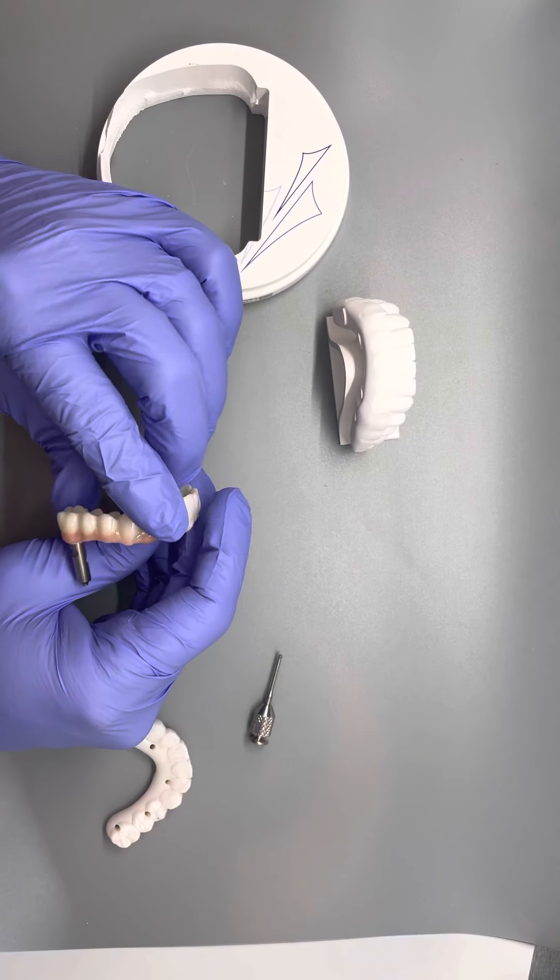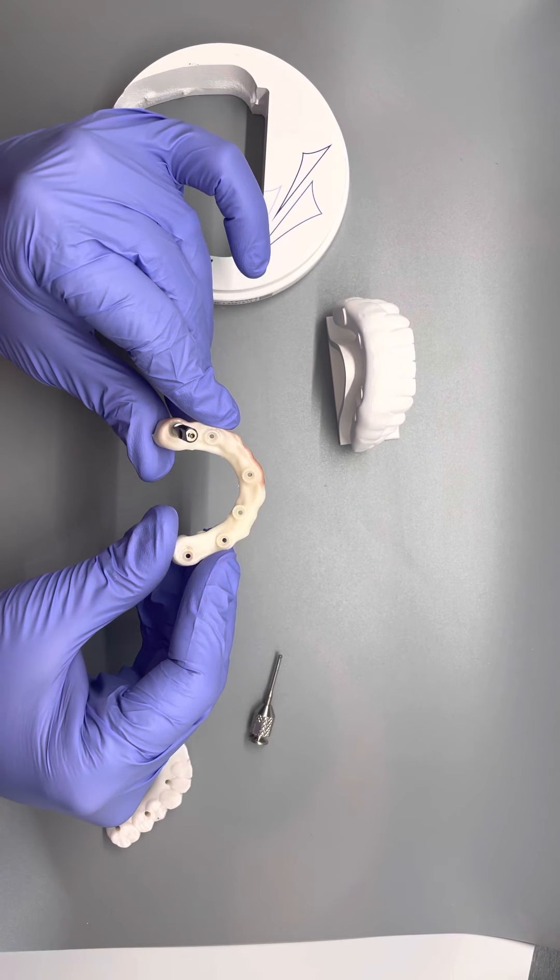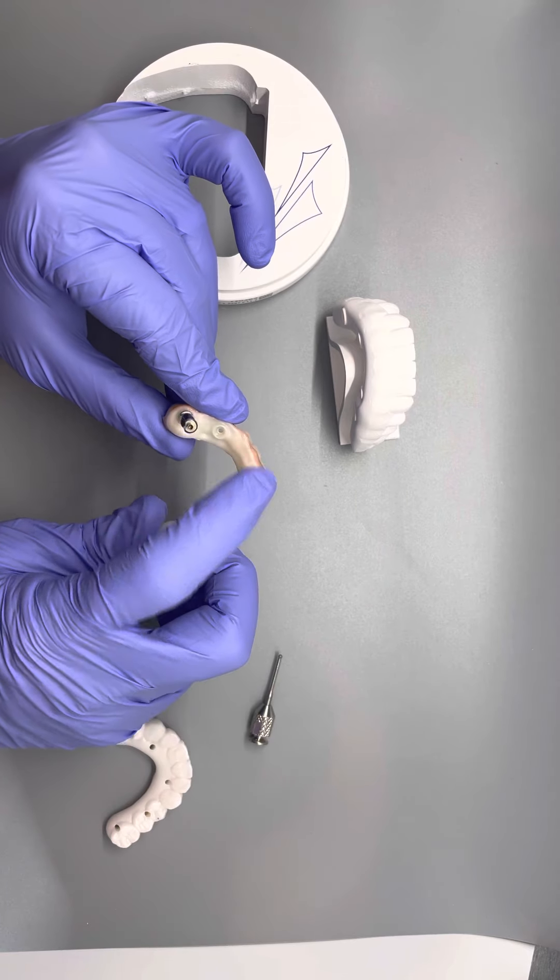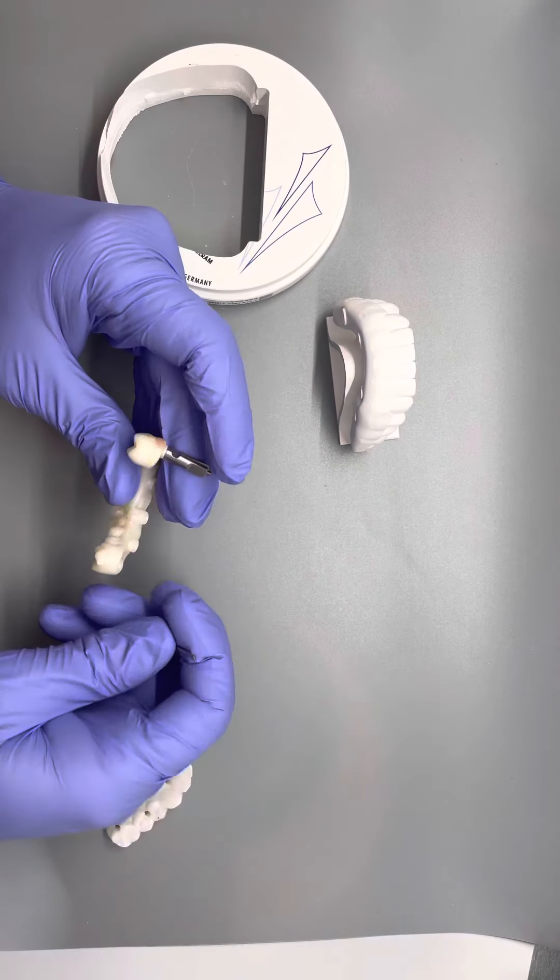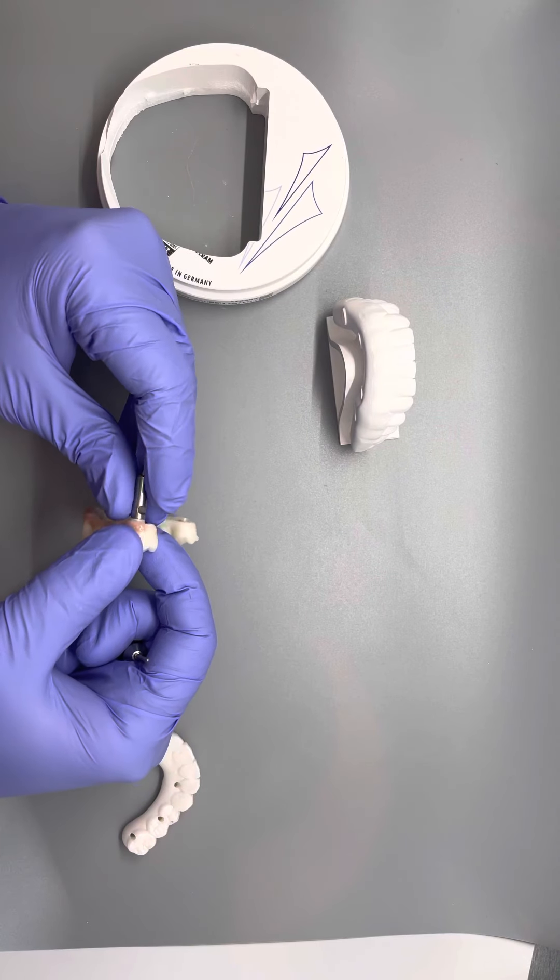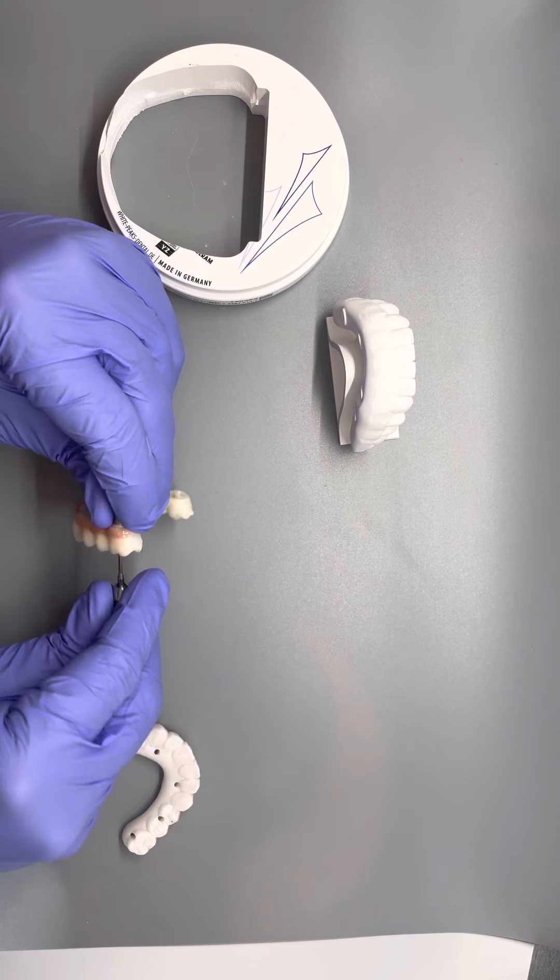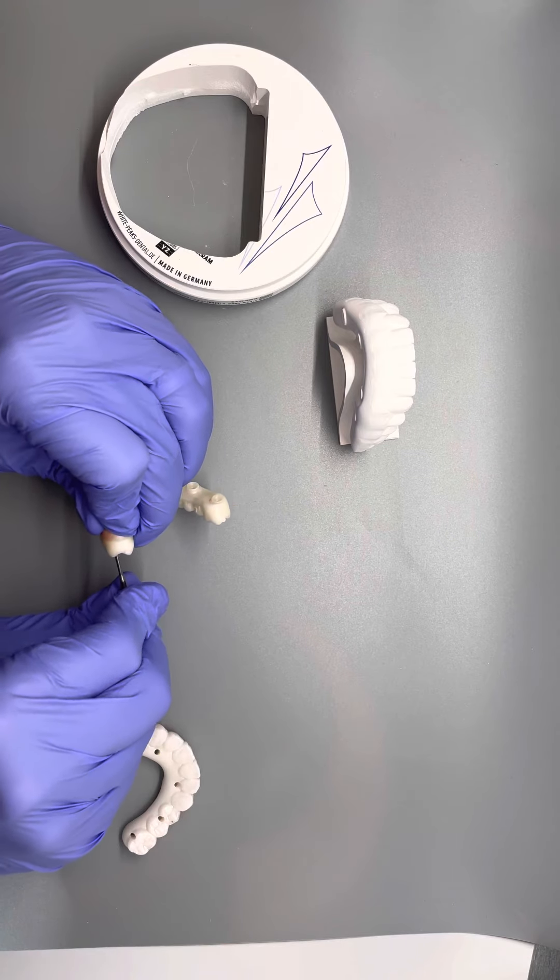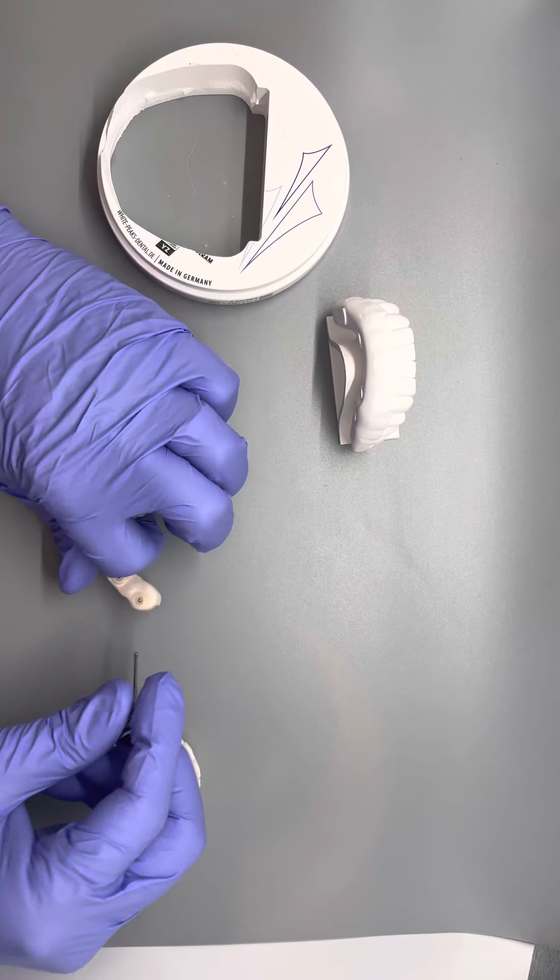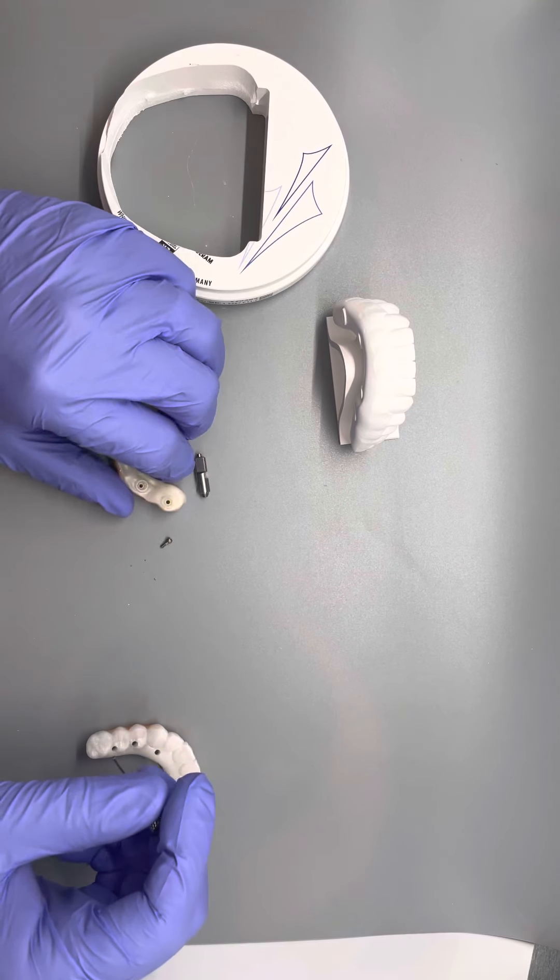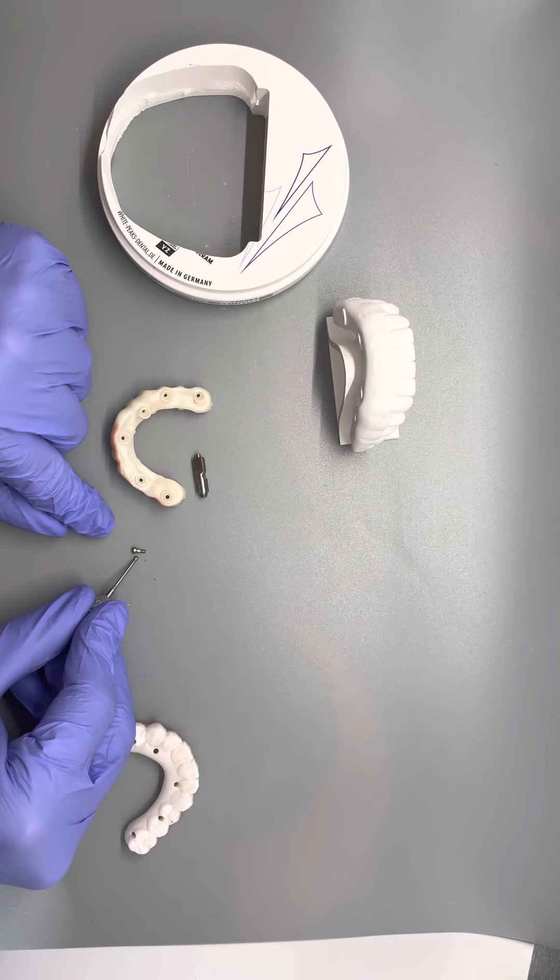And so this is just showing how we have on this patient we had six implants and how that screws down into the implant. This is not an implant. It's just an analog showing how that would work. But this is how we would screw in the screw denture. It's just this little screw right here. It's very strong.